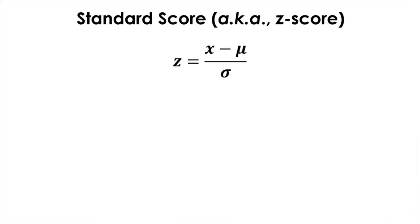Given a data set, any raw observation or score can be transformed to what's known as a z-score by subtracting the mean from the raw score and dividing that difference by the standard deviation. This process of converting a raw score into a standard score, or z-score, is called standardizing — or sometimes normalizing, though that term can mean something different. This way, any score can be expressed in terms of how far it is from the mean in units of standard deviation. Raw scores above the mean will have a positive z-score, whereas those below the mean will have a negative z-score. The mean itself will have a z-score of zero.